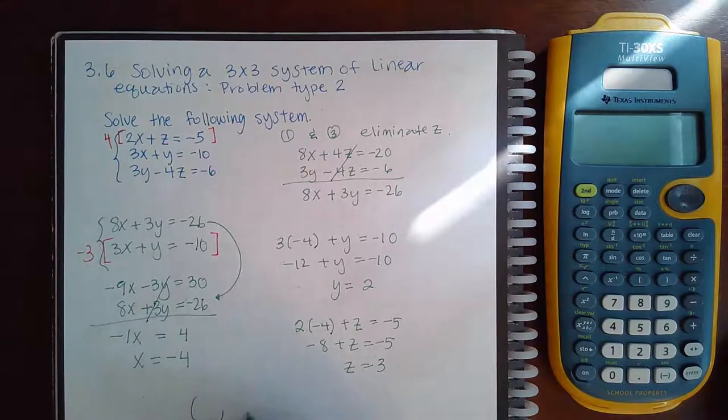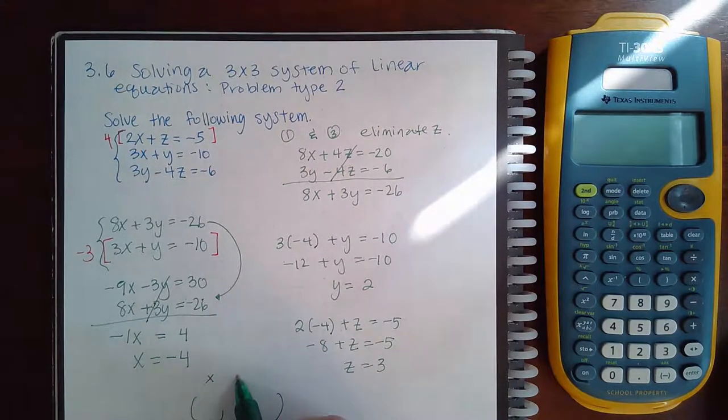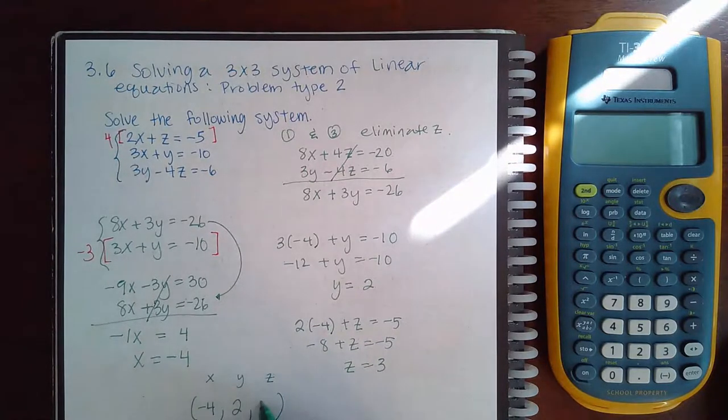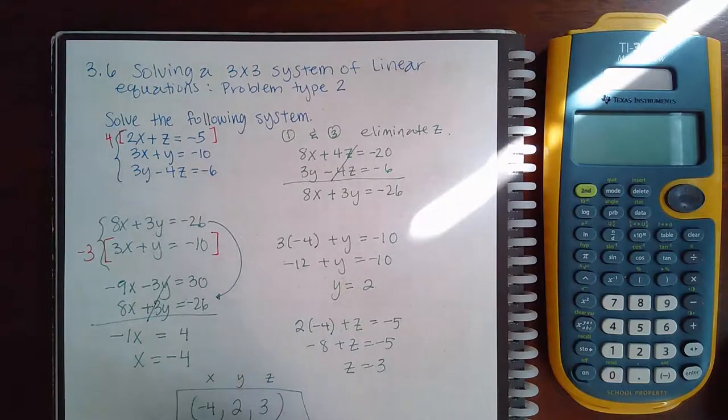And then how do we write our final answer? It needs to be the x coordinate, the y coordinate, and then the z coordinate. So negative 4, 2, and 3 is the final answer. Thank you.